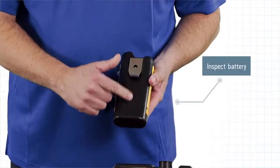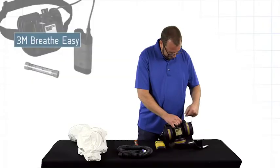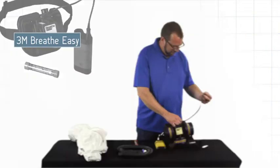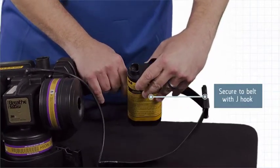Inspect the battery, looking for the service sticker and any damage. Inspect the power cord. Place the battery on the belt, making sure the J hook is latched.